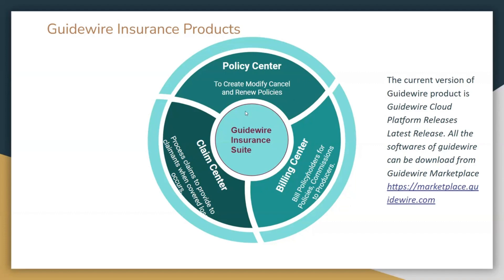In this demo, we are covering only the PolicyCenter application, not ClaimCenter or BillingCenter. The current version of Guidewire PolicyCenter is 10.0 — specifically 10.02.03.04 — which is the latest stable version in the market. From what I've heard, there will be no further major version numbers like 11 or 12. They are moving to the cloud, called Guidewire Cloud. Guidewire started from version 6.0 through versions 7, 8, 9, and the stable version now is 10.0. In the future, instead of numbered versions, everything will be consolidated as Guidewire Cloud.